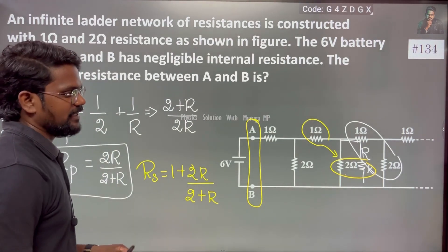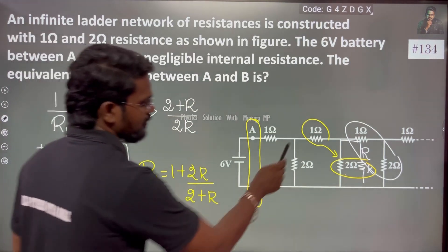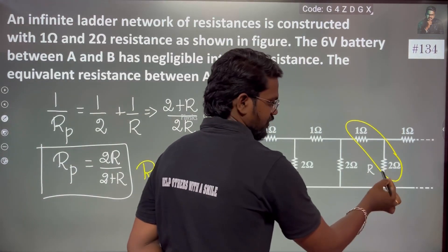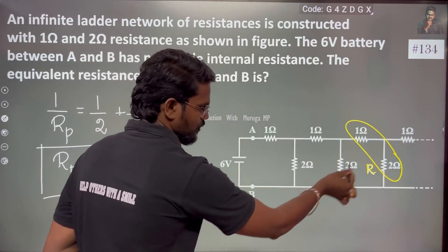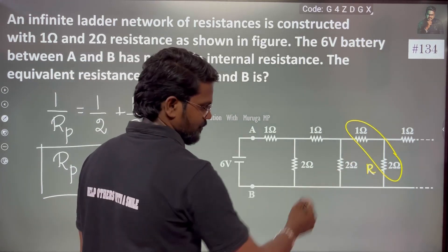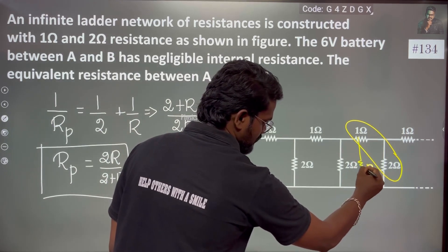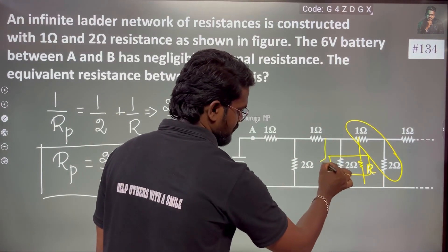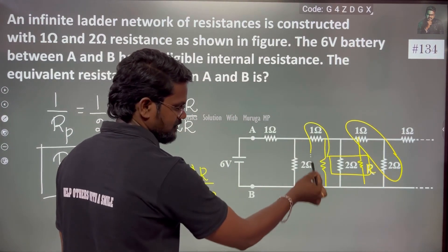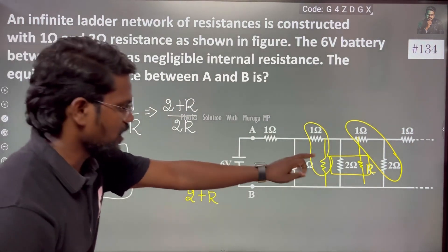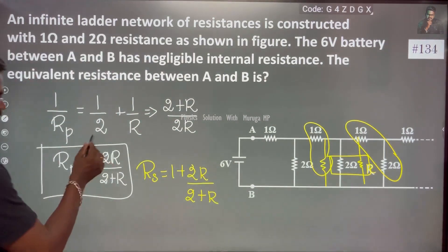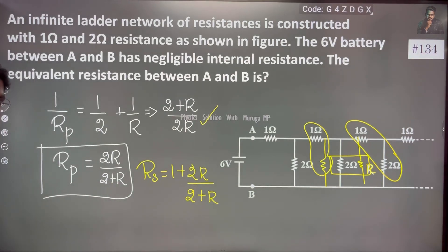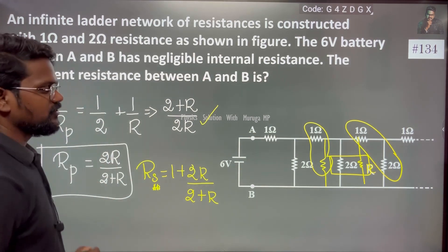So the total resistance RAB equals the 1-ohm series resistor plus the parallel combination Rp. That is, R equals 1 plus 2R divided by 2 plus R. Since all sections are identical, RAB equals R, so we set R equal to 1 plus 2R over 2 plus R.